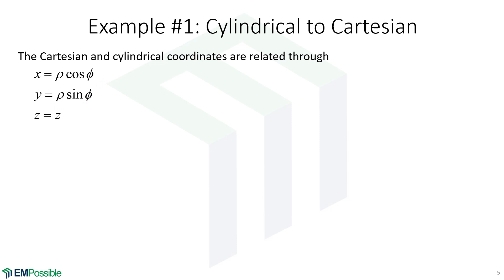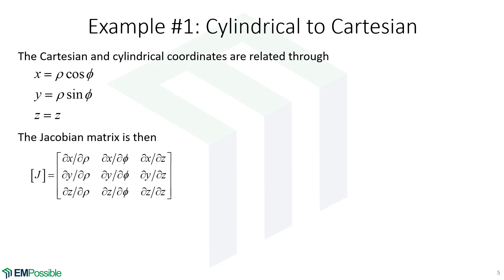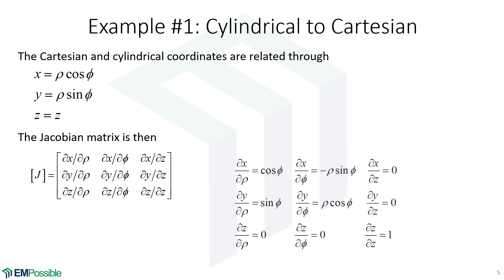So what would the Jacobian be for this transformation? We define our Jacobian — notice there are no scale factors because we're in Cartesian coordinates — and we go one term at a time. The partial derivative of X with respect to rho: taking the derivative of the equation for X with respect to rho gives us cosine phi. The partial derivative of X with respect to phi gives us negative rho sine phi. The partial derivative of X with respect to Z: there is no Z in the X equation, so that term in the Jacobian is zero.